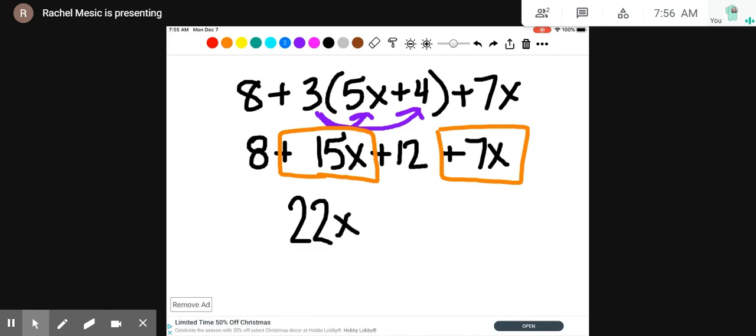And for the integers, we have 8 plus 12, which is 20. This is our final answer. We cannot combine those two together because one of them has a variable and the other doesn't. Let's try one with some negatives.